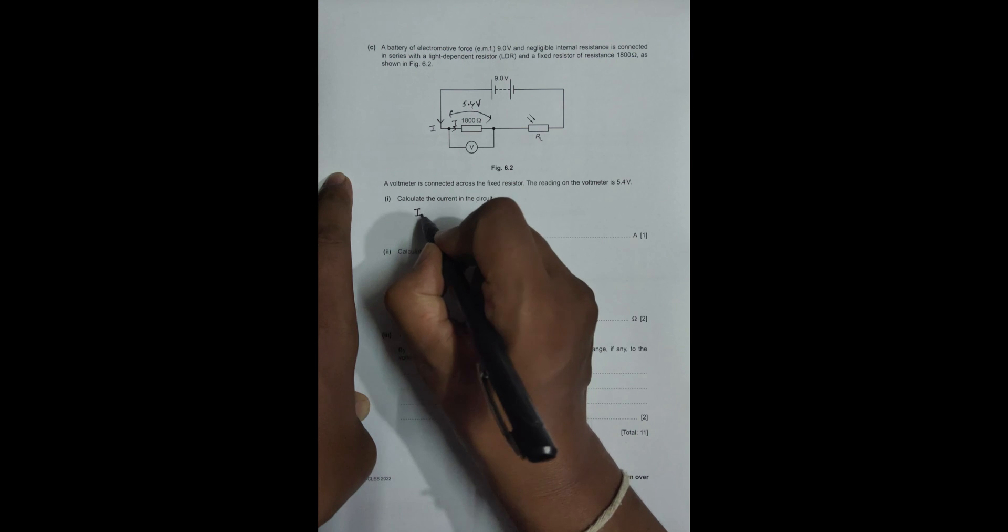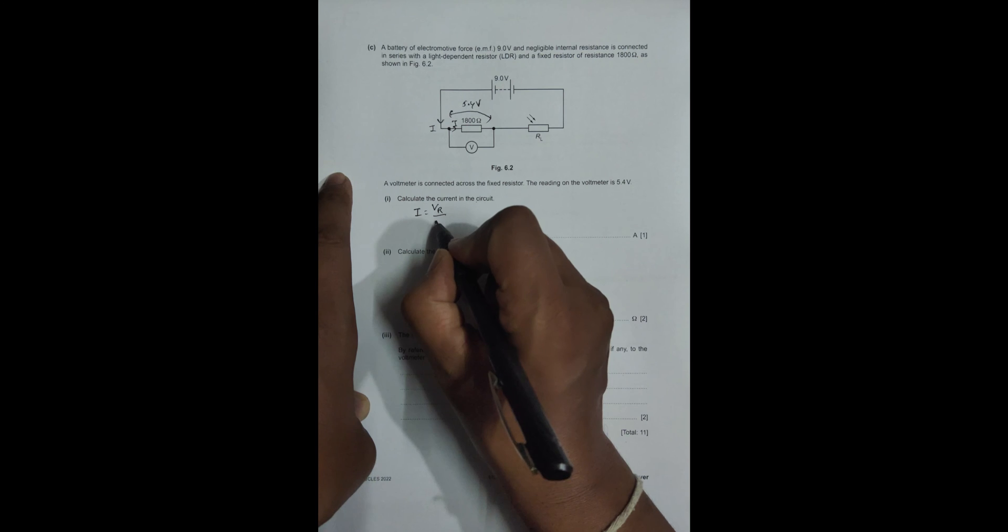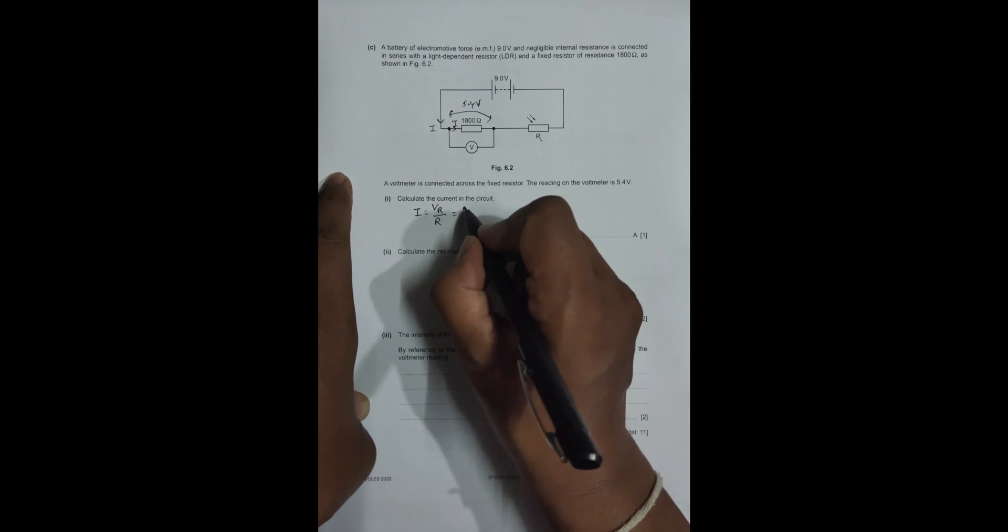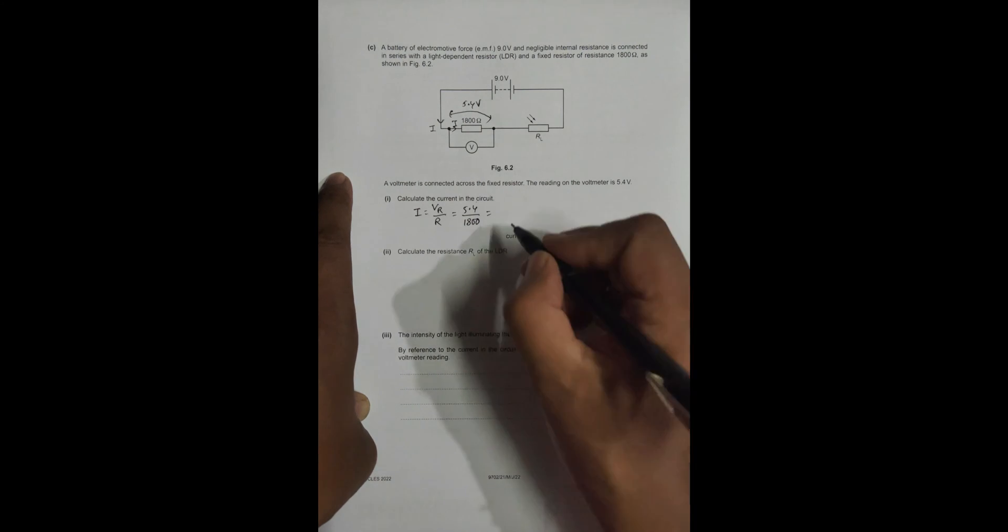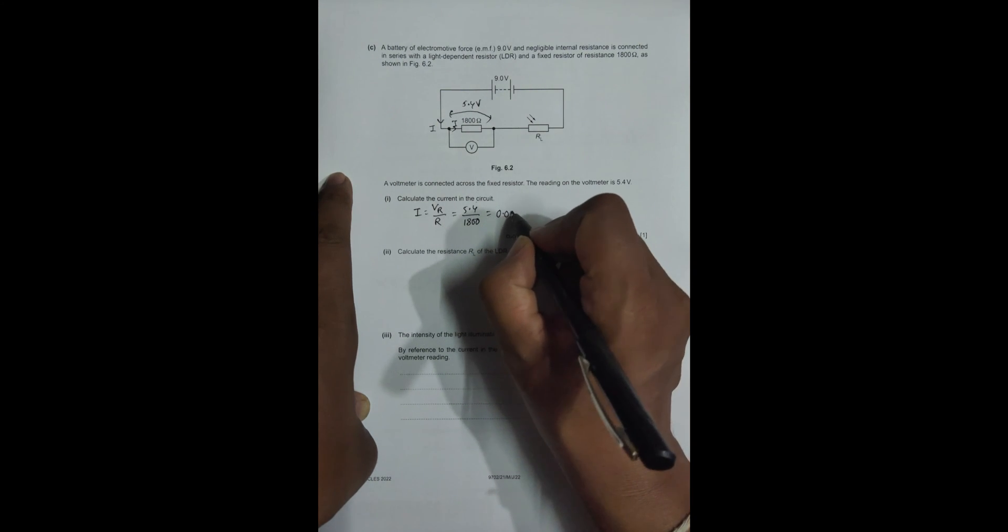This I is the same throughout, so I = VR/R = 5.4/1800. If I do this in calculator, 5.4 divided by 1800 equals 0.003 amperes, or 3×10⁻³ amperes.